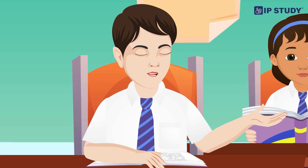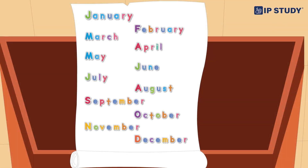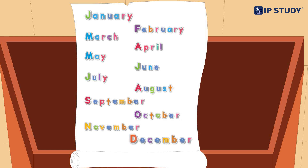Now let's learn months with their number of days. Let's recite together. January, February, March, April, May, June, July, August, September, October, November, December.